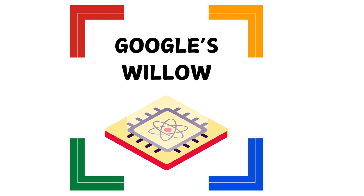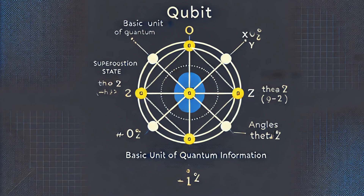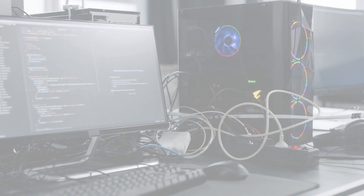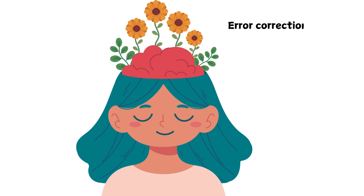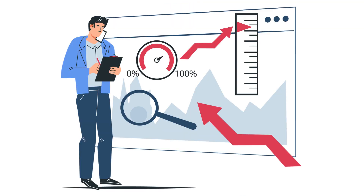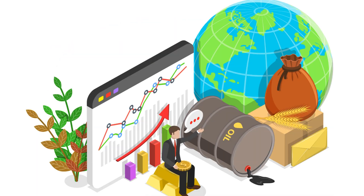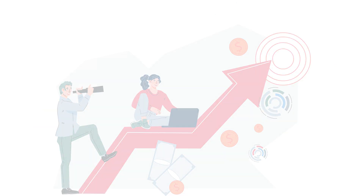To recap: we've talked about Google's Willow processor, a powerful new component for quantum computers. We've delved into qubits — these mind-bending units of information that allow quantum computers to perform calculations at speeds unimaginable with classical computers. We've also touched on the challenges of error correction and the importance of tunable qubits for optimizing performance.